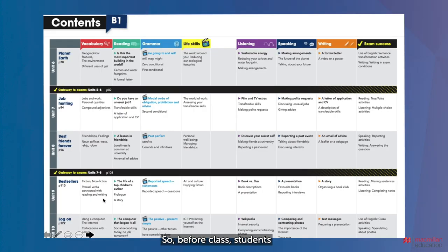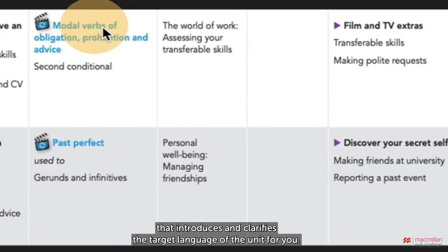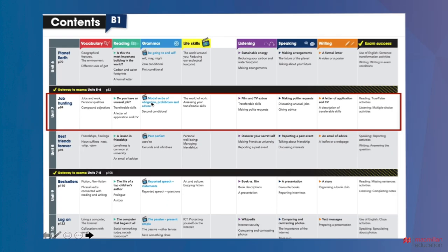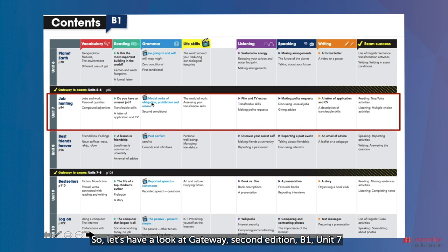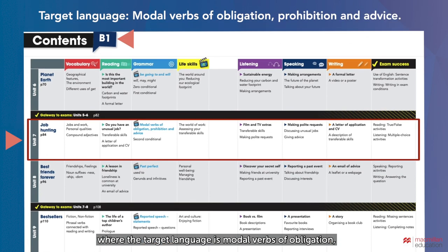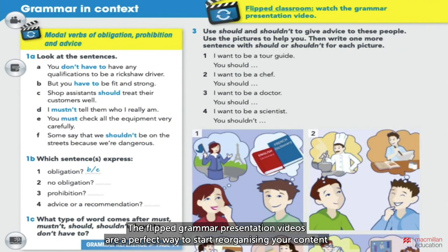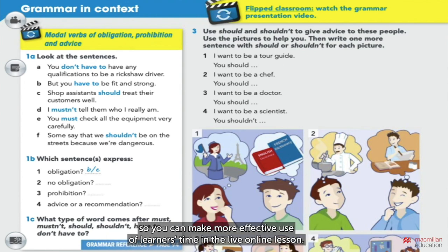This is in preparation for the practice and production stages that happen in the live online lesson. So before class, students watch a video that introduces and clarifies the target language of the unit. Let's have a look at Gateway 2nd edition B1 Unit 7, where the target language is modal verbs of obligation, prohibition and advice. The flipped classroom presentation videos are a perfect way to start reorganizing your content so you can make more effective use of learners' time in the live online lesson.